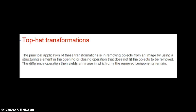The principal application of these top hat and bottom hat transformations is removing objects from an image by using a structuring element in the opening and closing operation that doesn't fit in the objects being removed. The subtraction — subtracting the opening from the original for the top hat, and subtracting the original from the closed for the bottom hat — yields an image in which only the removed components remain.